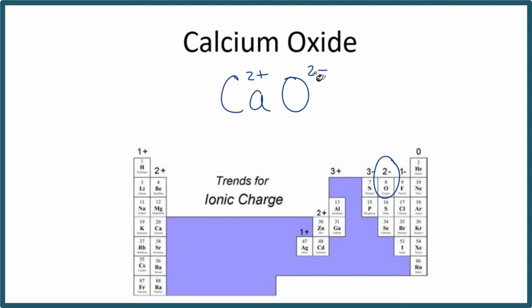So when we crisscross them, you would just think the 2 would go here, here, and get rid of our charges. And that would be the formula for calcium oxide.